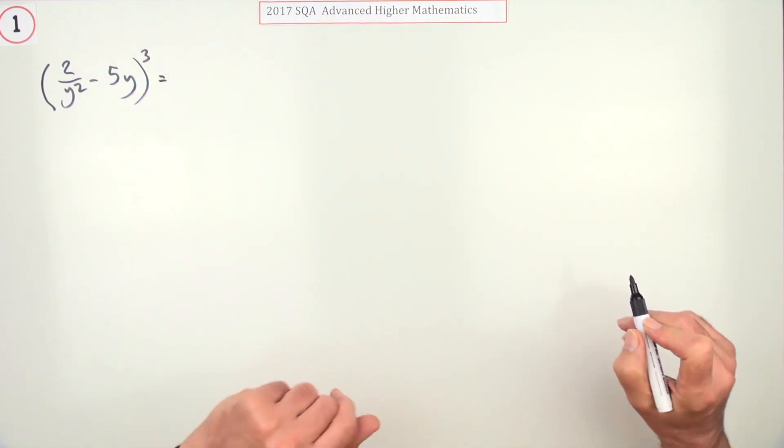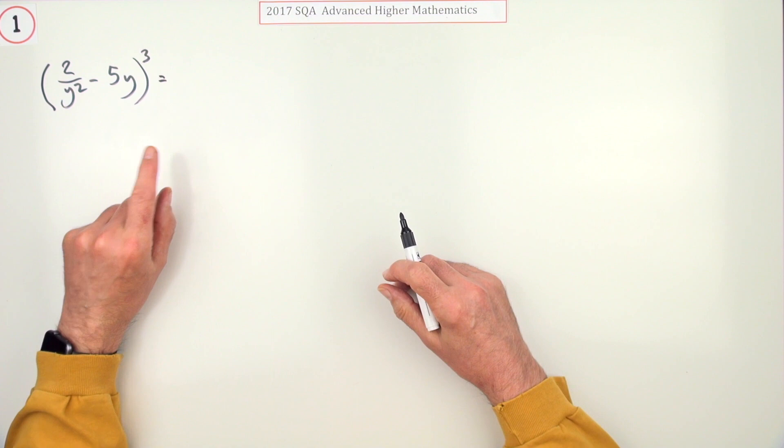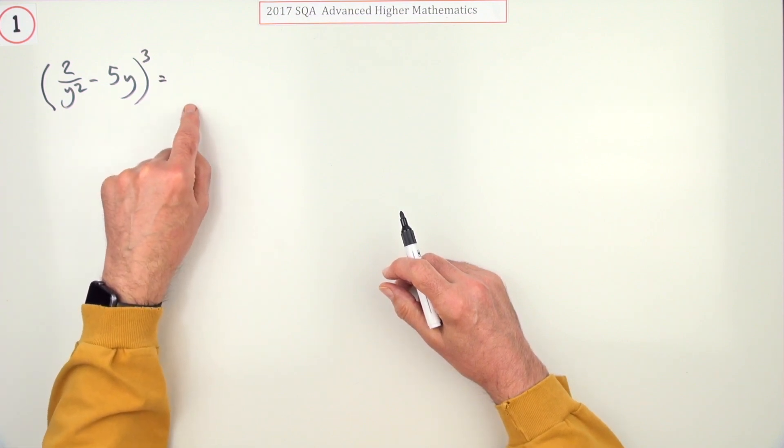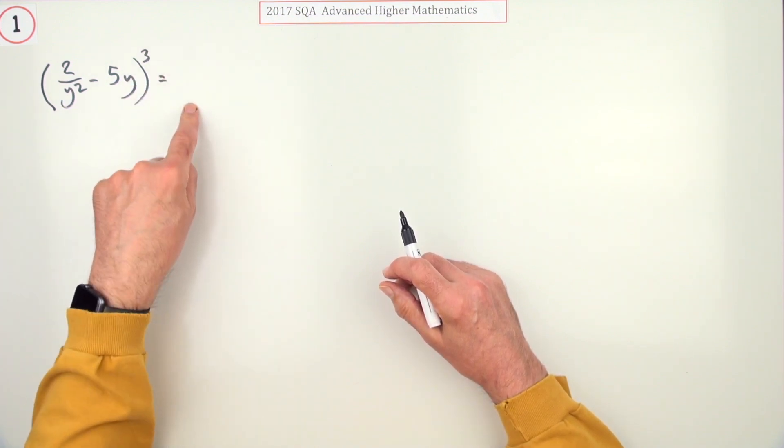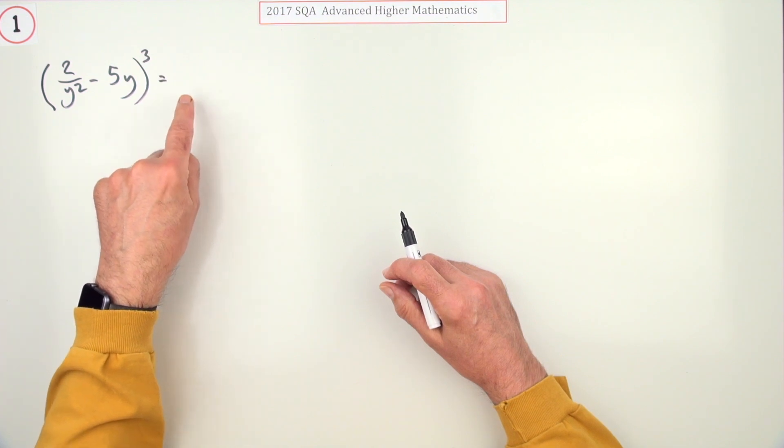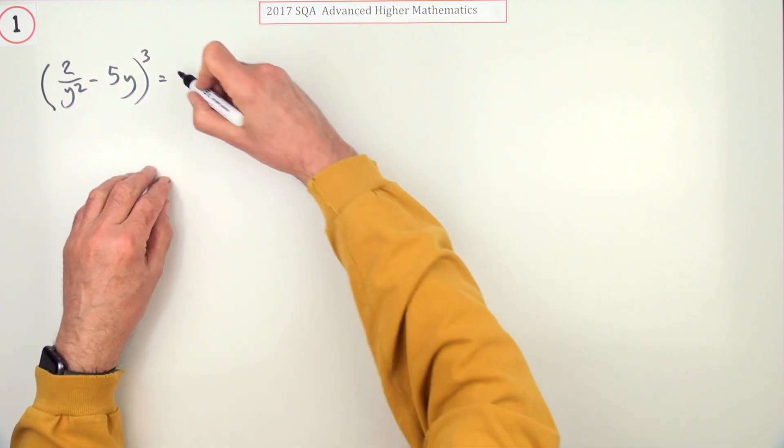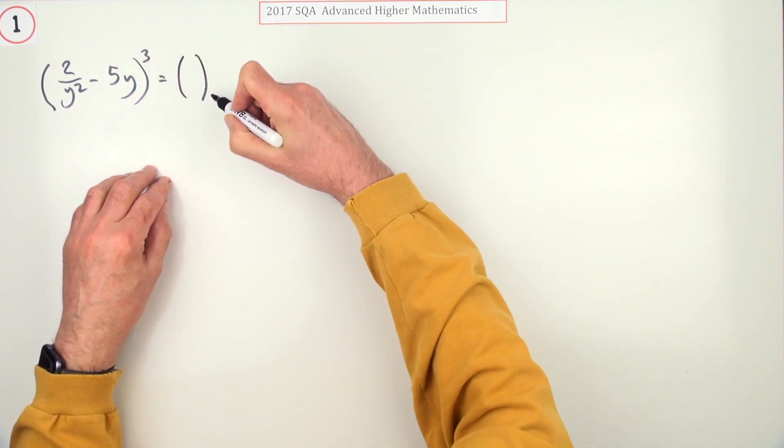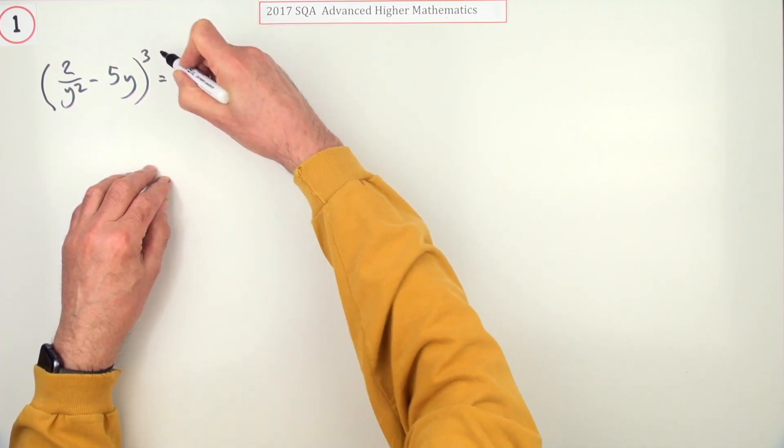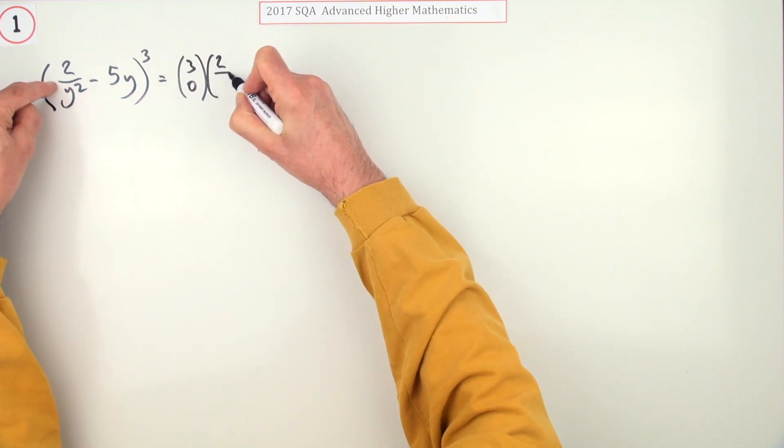One thing though—in all the marking schemes, it always seems to want the combination written down rather than the actual numerical value, as in picking it from Pascal's triangle. So I'll start off that way as well. The typical term, since it's three, would be (3 choose 0) times the first part of the binomial and the second part.